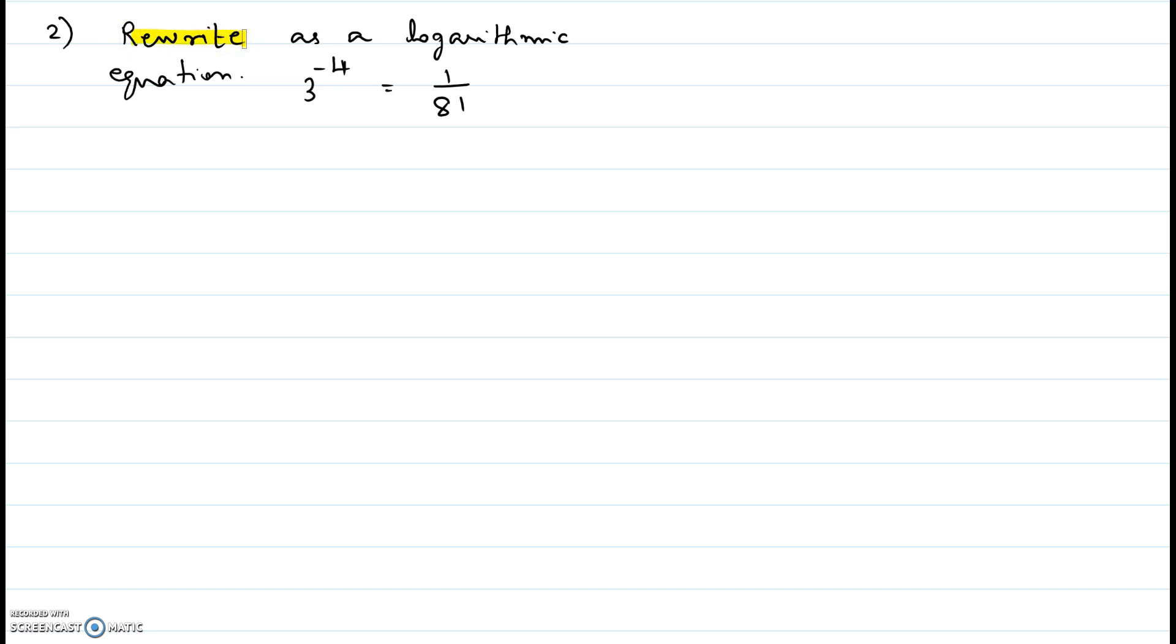Rewrite as a logarithmic equation. First you notice the given equation 3 to the negative 4 equal to 1 over 81 is given in the exponent form.